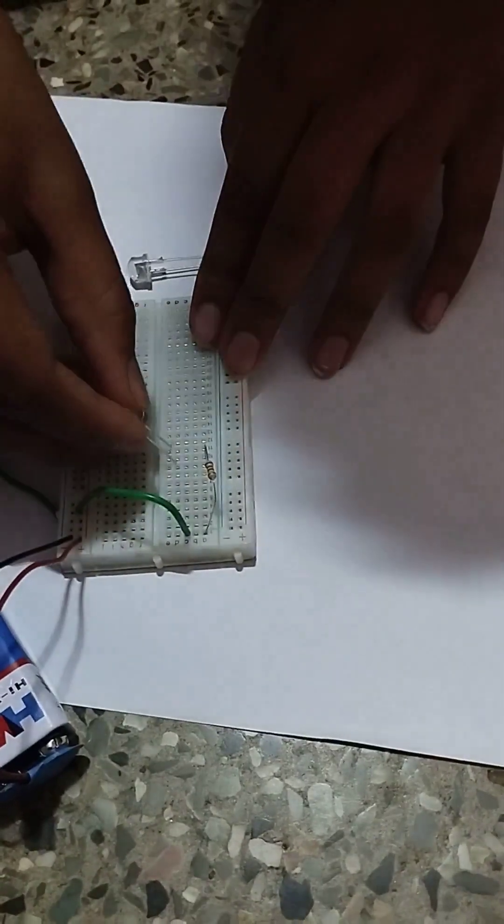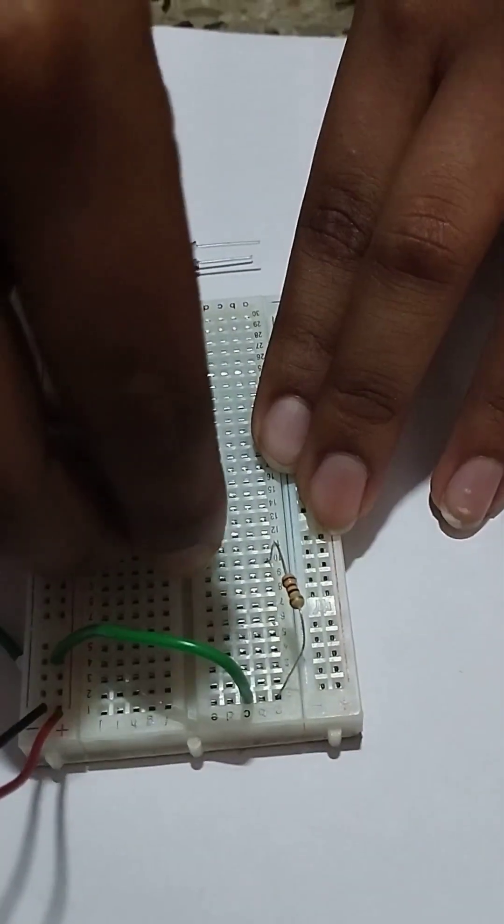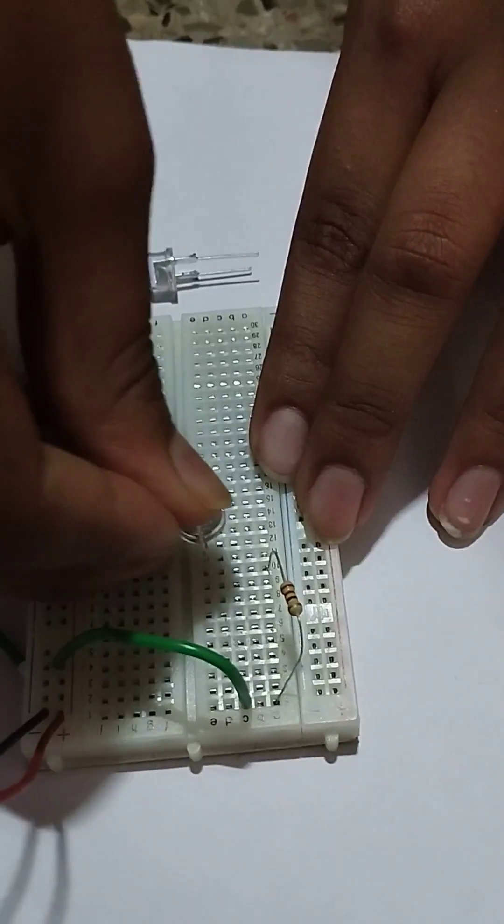Now I take one LED and connect it to one of the terminals of the resistor over here in the 10th row E column.